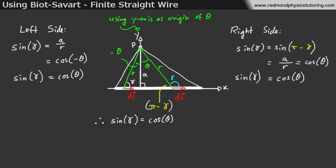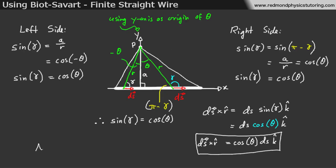And if we substitute that into the expression we just had for dS cross r-hat, which was dS times sine gamma k, we can substitute cos of theta in there, so we get dS cross r-hat is equal to cos of theta times dS k-hat. Also notice that cos of theta is equal to a over r, and I mentioned that twice already, but this is something we're going to reuse very shortly.